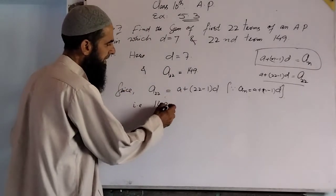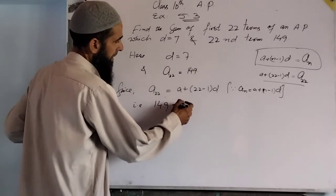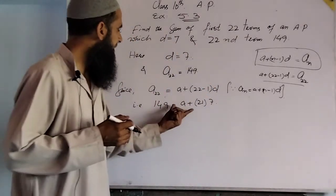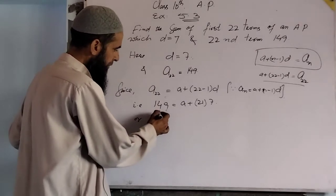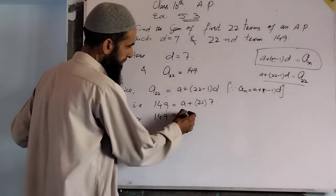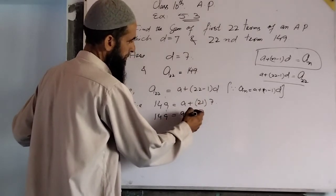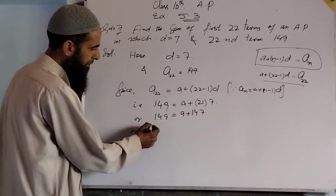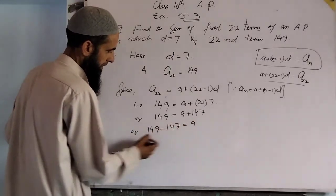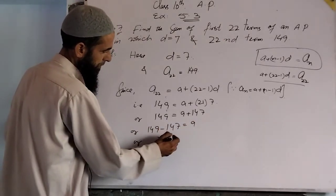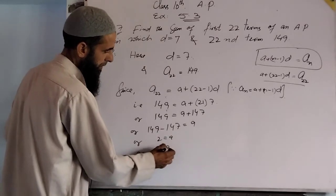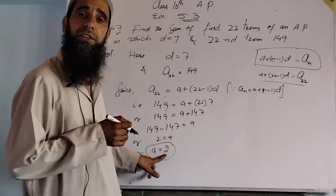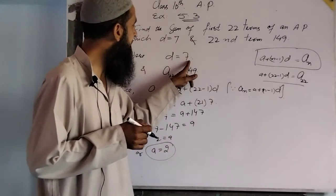Substituting the values: 149 equals a plus 21 into 7, which gives 149 equals a plus 147. Simplifying, 149 minus 147 equals a, so a is equal to 2. The first term of this arithmetic progression is 2.